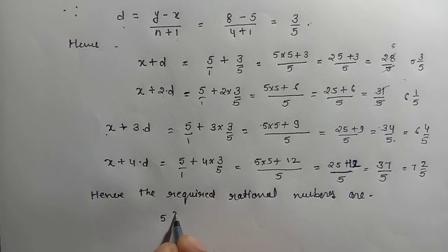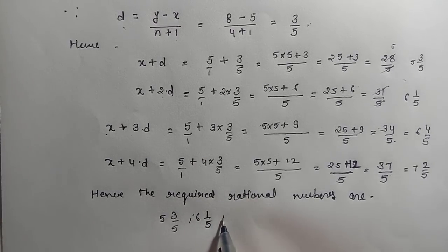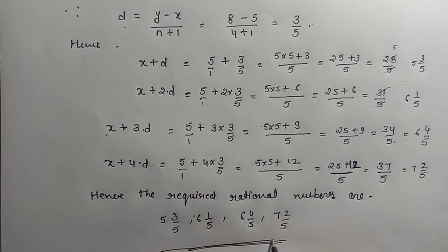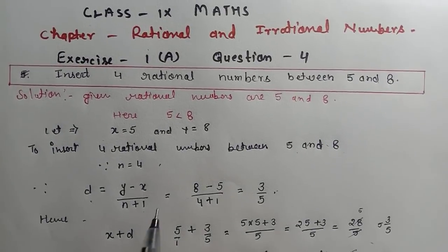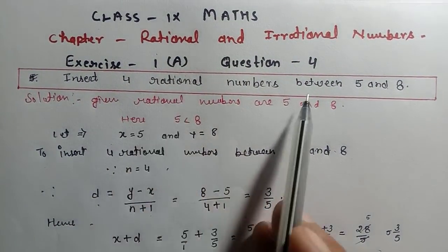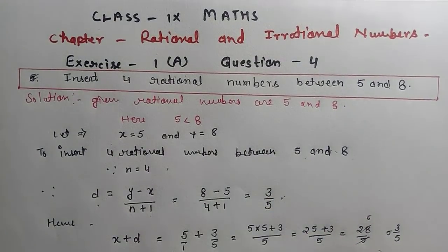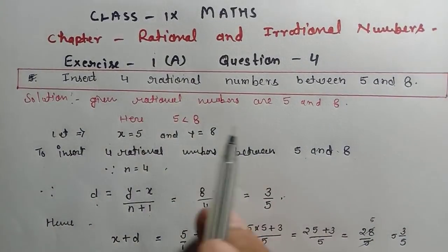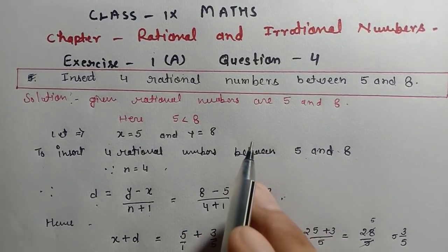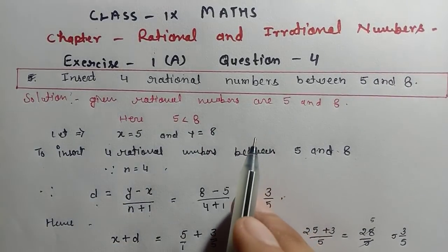Hence, the required rational numbers are: 28 by 5 (first number), 31 by 5 (second), 34 by 5 (third), and 37 by 5 (fourth). These are the 4 rational numbers inserted between 5 and 8. I hope Exercise 1E Question 4 is very clear to you. If you have any doubt, you can ask me in the comment box. It's all, thank you.